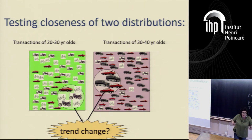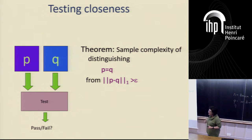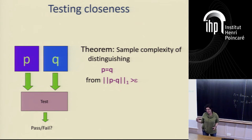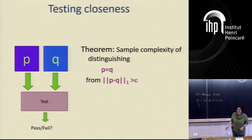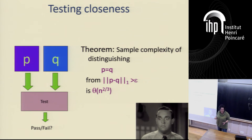What about closeness of two distributions when they're both coming in via samples? What do you think the sample complexity is? Everything we've been saying is root n, so how about root n? That was my vote before we started working on this problem, and we couldn't get it. We thought there was a bug in our proof — one day we did have a bug, so we did get root n, but then we could never recreate that bug. It turns out it's theta n to the two thirds — we found this really surprising, and that is the bound on this problem.